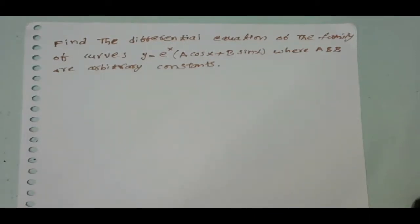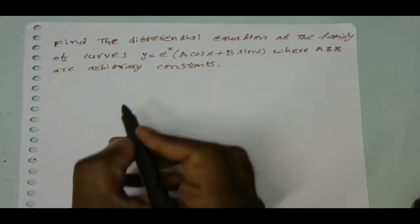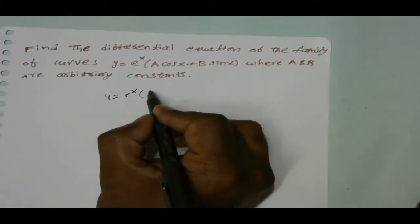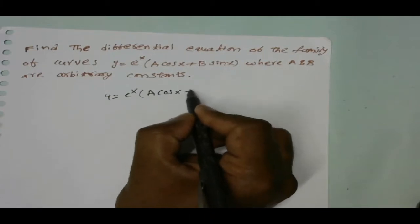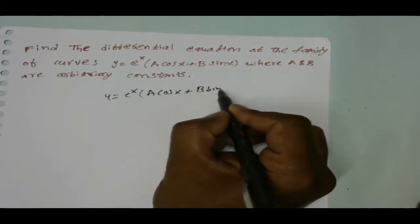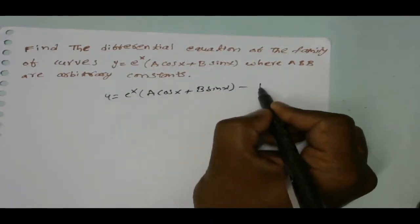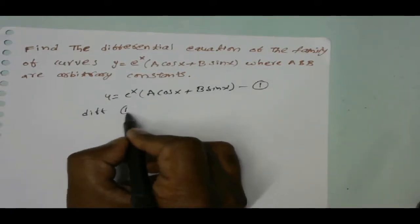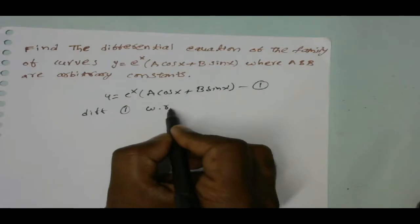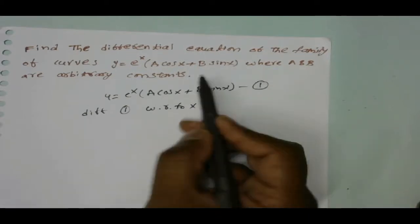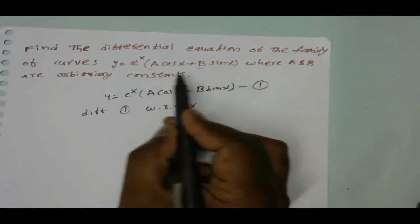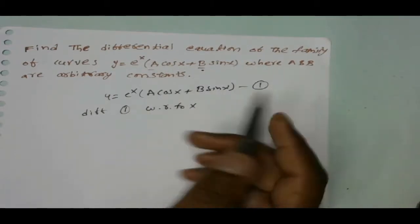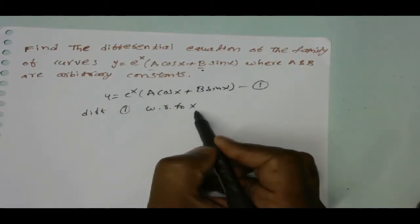First I am taking the given equation, that is y equal to e power x into a cos x plus b sin x. I am taking this as the first equation. Now differentiate equation 1 with respect to x. Here a and b are arbitrary constants — two arbitrary constants means you have to differentiate two times.